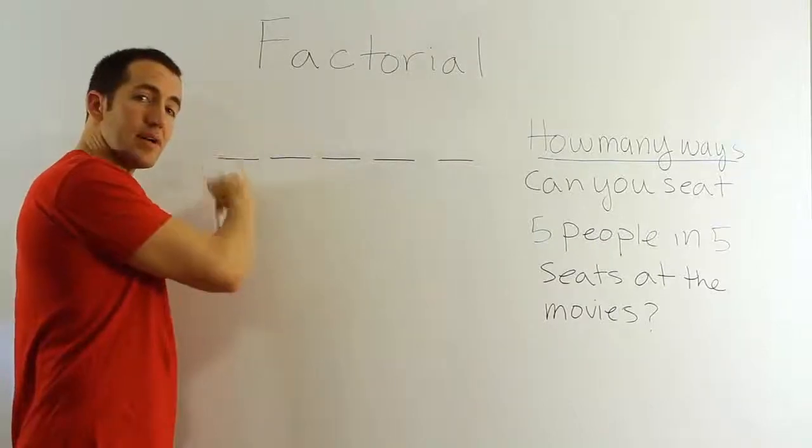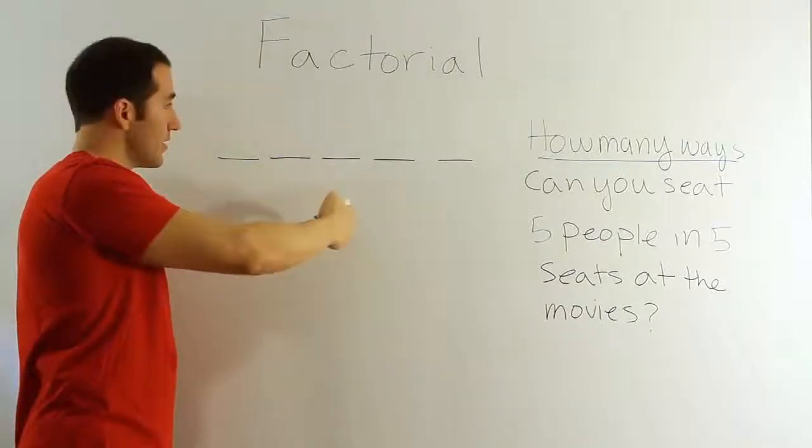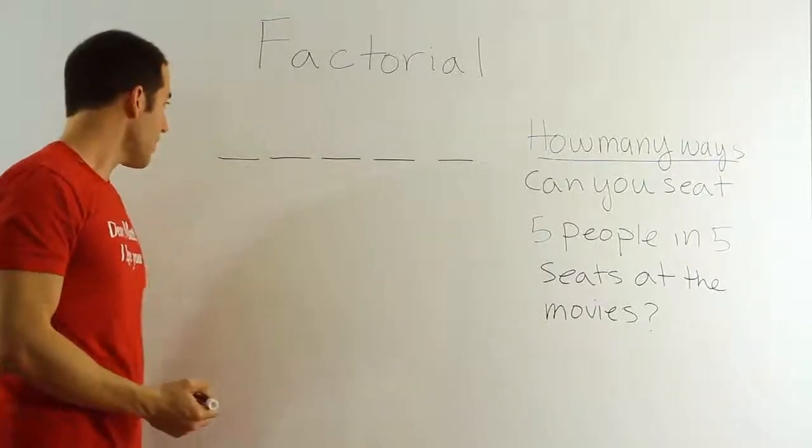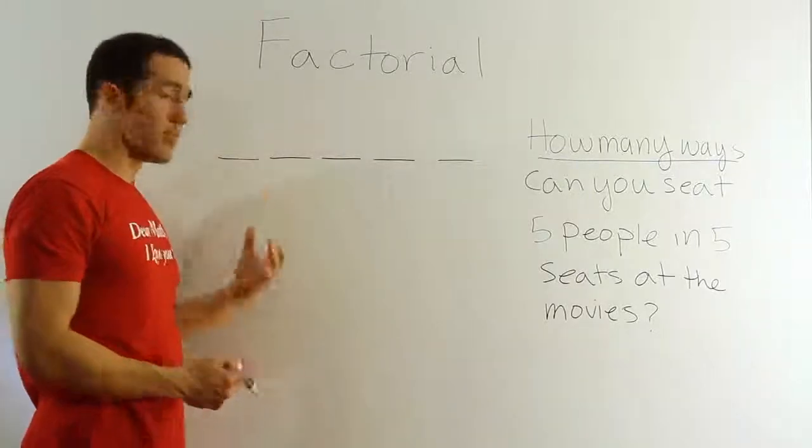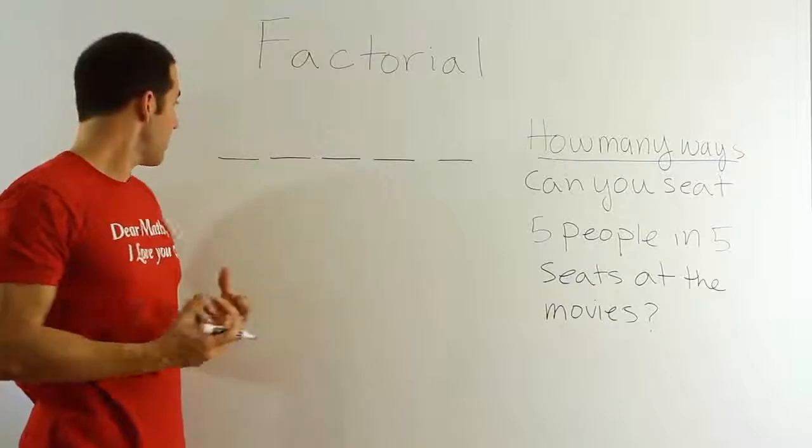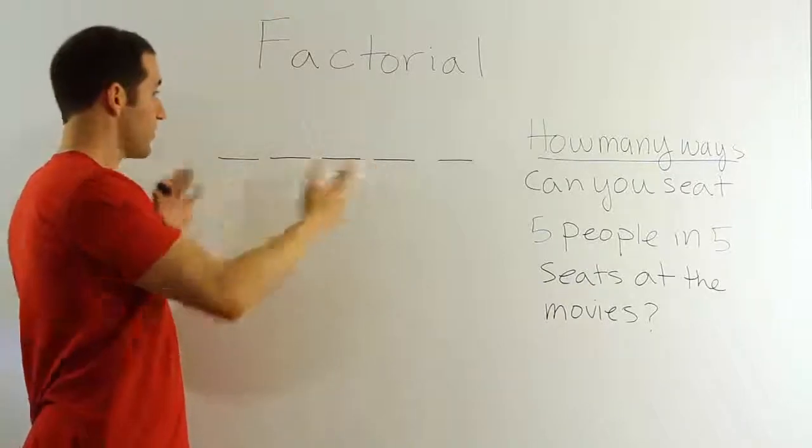This will be sitting the first seat, sitting the second seat, sitting the third seat, so on and so forth. All right. Well, how many people or how many ways can we accomplish the first step? In other words, how many people are going to be available to us when we first come to the five seats?